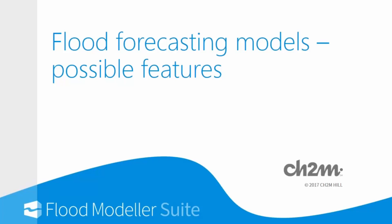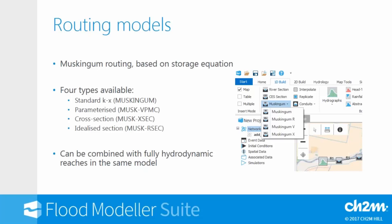Things that are fairly specific to flood forecasting: steep models often have problems in fully hydrodynamic models, but we can use routing sections to overcome that. We have four Muskingum routing units: two parameterised ones - the standard KX method and the VPMC (Variable Parameter Muskingum-Cunge) method - and two based more on cross sections: the XSEC unit based on a full cross section, and the RSEC (routing section) unit based on an idealised cross section.